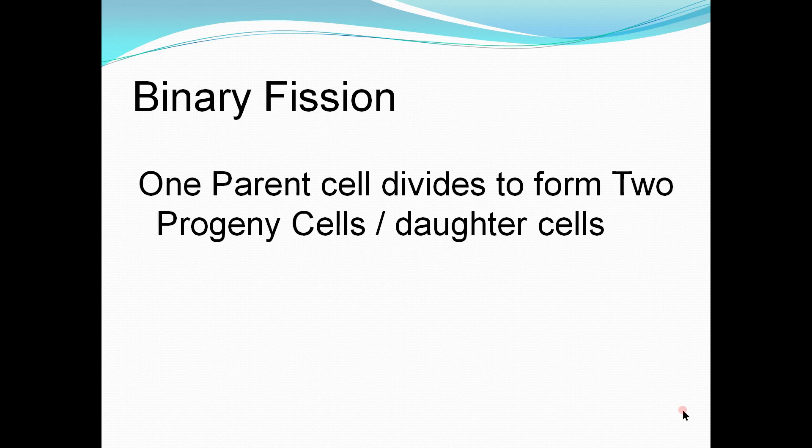Binary fission is the process in which one parent cell divides to form two progeny cells or two daughter cells. The bacterial cell elongates and splits into two daughter cells, each with identical DNA to the parent cell. We can say that each daughter cell is basically a clone of the parent cell.